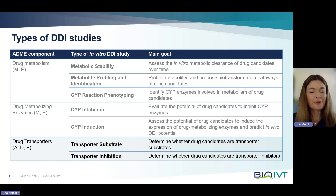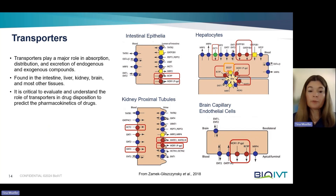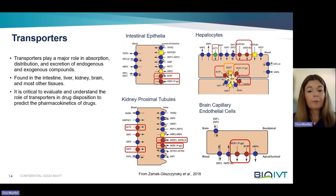Now let's move to the last subject: transporters, and more specifically transporter substrate and inhibition. Before we delve into the specifics, let me give you a brief overview of the most relevant clinical transporters and what role they play. Transporters play a major role in absorption, distribution, and elimination of drugs, and are found in most tissues of the body — most importantly, they are present in the intestine, liver, kidney, and brain.